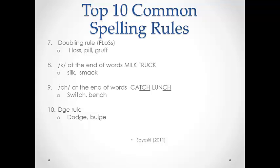The number 8 rule is one that I called the milk truck rule. Basically, if you hear K at the end of a word right after the vowel, we have to spell it CK, like in 'truck.' If we hear K at the end of the word but there is another consonant after the vowel, we simply use K, like in the word 'milk.' Later, we would teach children that the only time C is used to make the K sound at the end of the word is with words ending in IC, like 'music.'